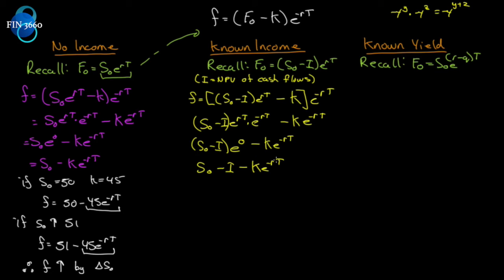Be very clear: the income term here is the net present value of the future cash flows — do not substitute the raw cash flow. I've repeated this many times and will keep saying it, because it trips everyone up. It must be the net present value.